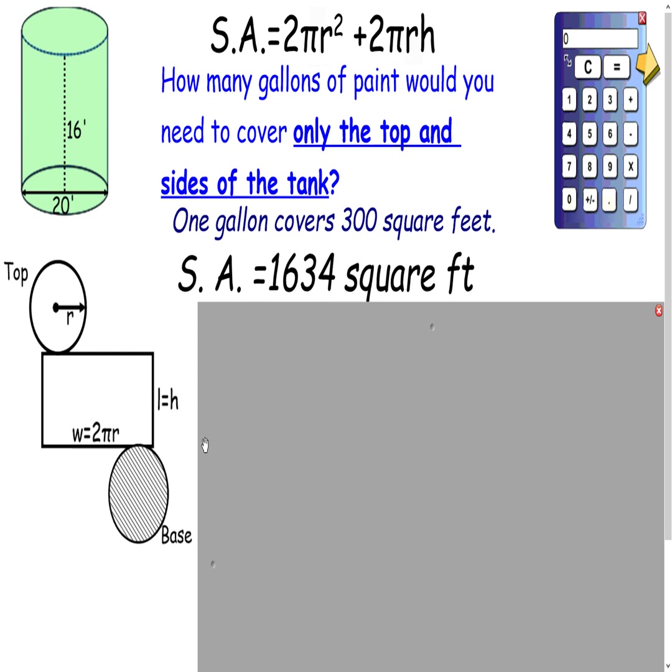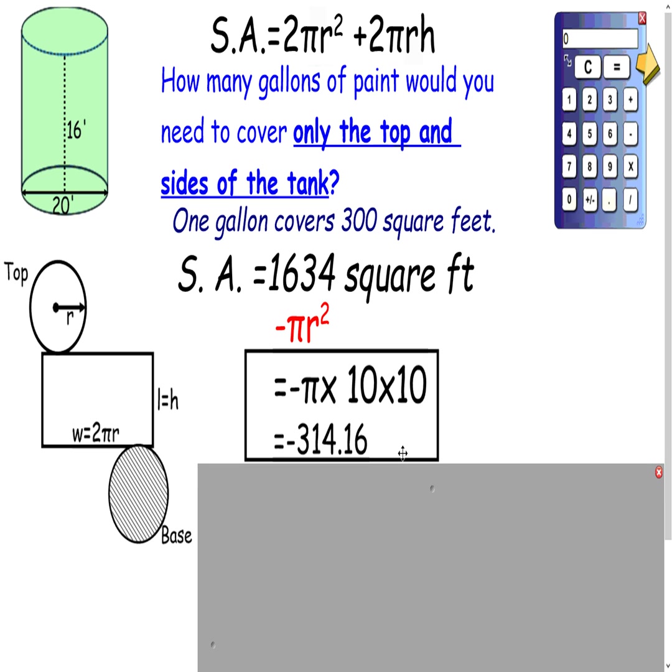Okay, we have a surface area of 1,634 square feet. But we don't want to do the base here. So we're going to take the area of the base, and we're going to subtract it out. We're going to subtract pi r squared, the area of the base. So pi r squared is 3.1416 times our r of 10 times 10. We're going to subtract out 314.16 feet squared.